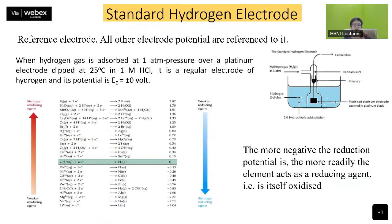One more concept is the standard hydrogen electrode (SHE), which is a reference electrode to which most electrode potentials are referenced. It is made by absorbing hydrogen gas at one atmosphere pressure over a platinum electrode dipped at 25°C in one molar HCl. Its potential is defined as zero volts. From the table of reduction potentials, the more negative the reduction potential, the more readily the element acts as a reducing agent and gets oxidized. This allows you to predict which element will be oxidized and which will be reduced when placed in contact.